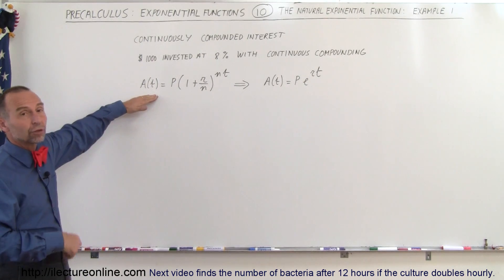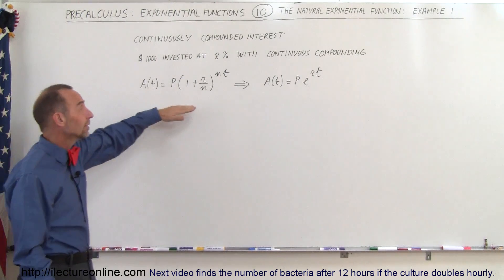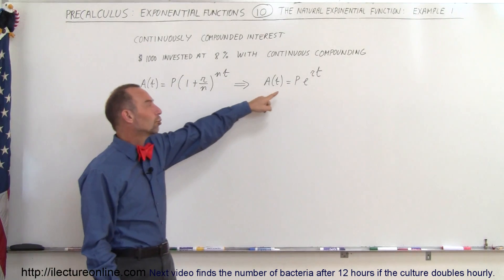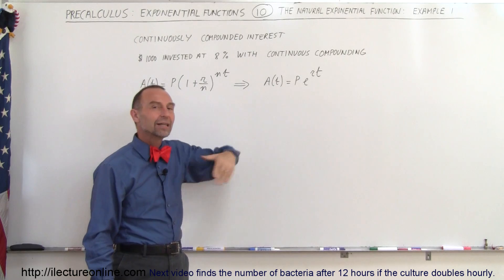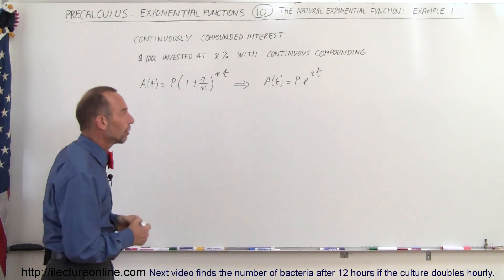So from the equation that we use for compounded at periodic intervals like yearly, monthly, or weekly, or even daily, we can then convert that to continuous compounding via the exponential function or the natural exponential function.